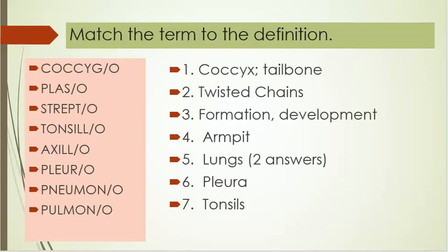The terms are coccygeo, plazo, strepto, tonsillo, axillo, pleuro, pneumono, and pulmono. Number one: coccyx, tailbone. Number two: twisted chain.